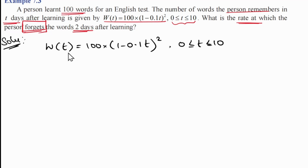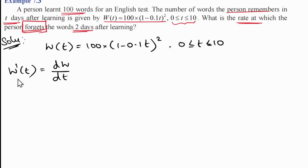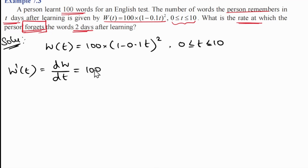So if we have w(t), we need to differentiate it. Here 100 is a constant. We have 1 - 0.1t, the whole square — this is an algebraic function.